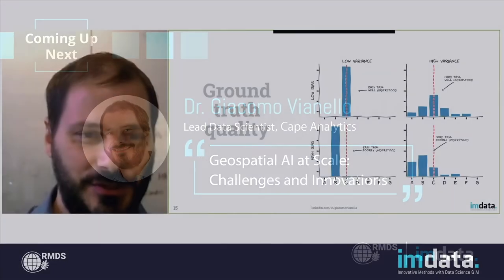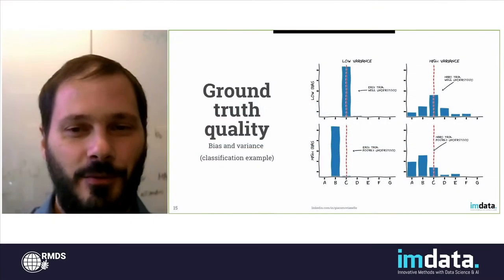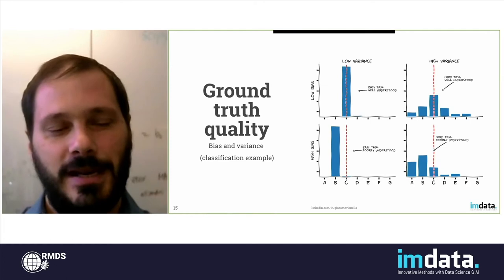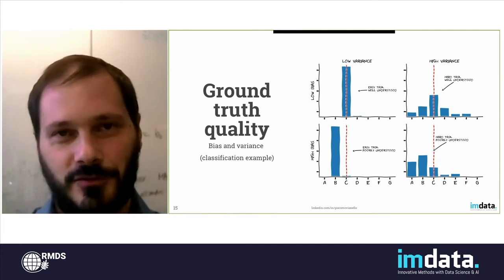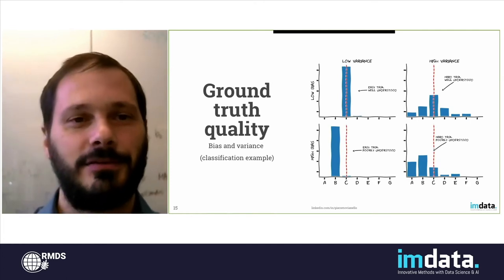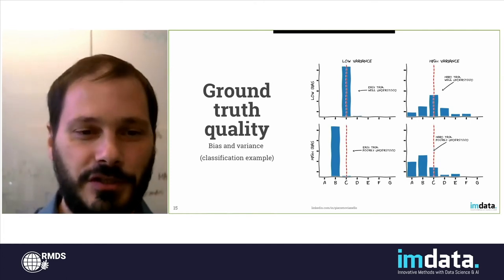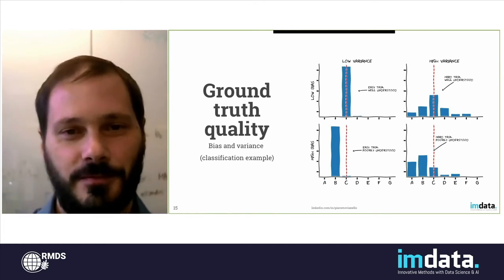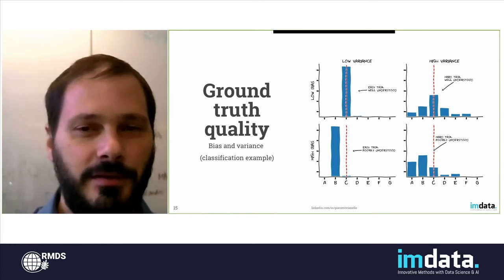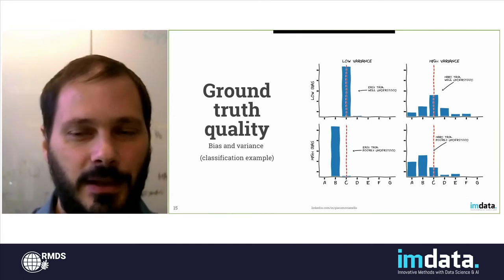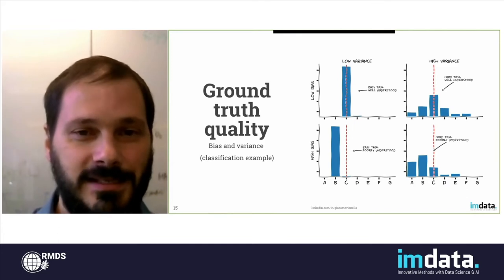Something more serious: once you start collecting ground truth, you have to have a good handle on the quality of the ground truth. And you can think about, in particular, bias and variance.